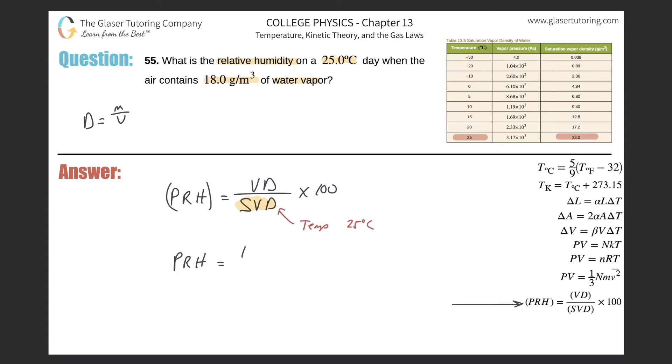So this is 18.0, divided by the saturation vapor density found from the table, 23.0. Remember, the units are the same, so I can just plug them in. I don't have to do any conversion.